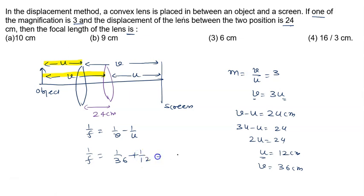So minus negative 12 gives 1/12. Finding the LCM of 36, we get 1/F equals 4/36, which simplifies to 1/9. Therefore, the focal length is 9 cm.